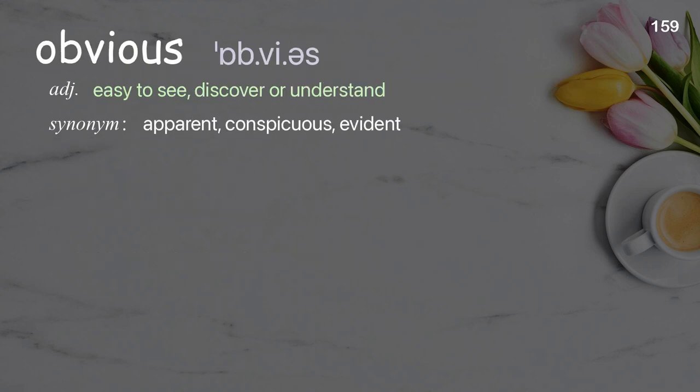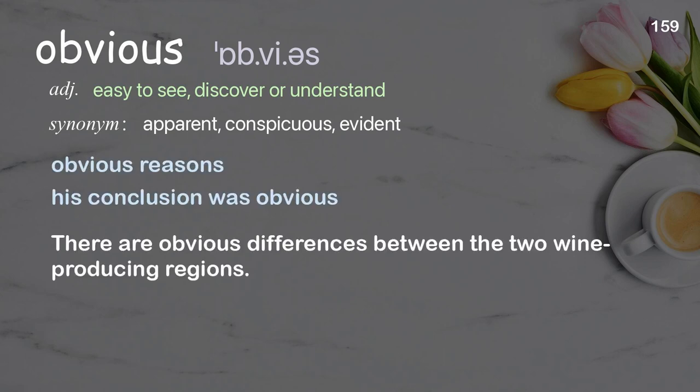Obvious: easy to see, discover, or understand. Examples: obvious reasons, his conclusion was obvious. There are obvious differences between the two wine-producing regions.